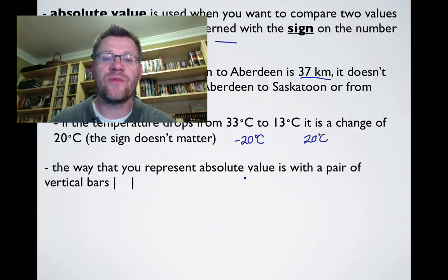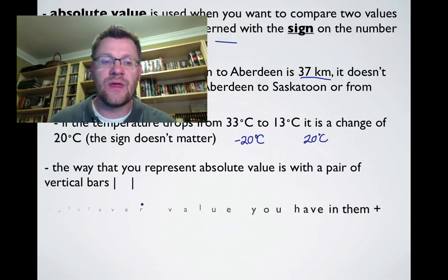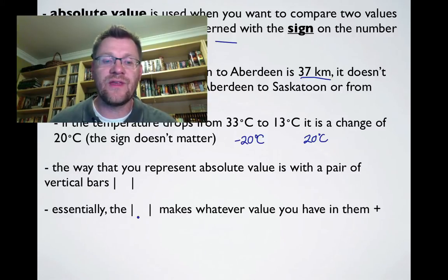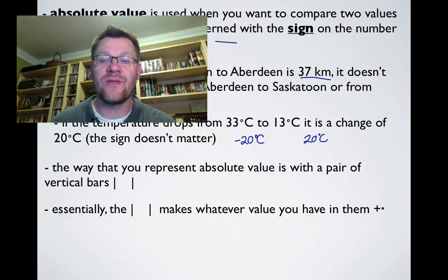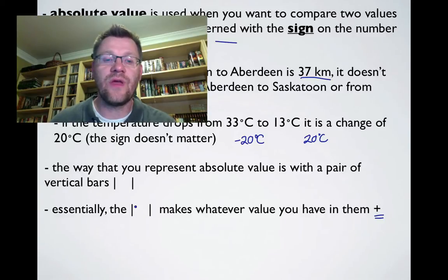Absolute value is represented with a pair of vertical bars. Essentially, the vertical bars make whatever value is inside them positive. That's a big deal — whatever you have inside those bars becomes a positive value.